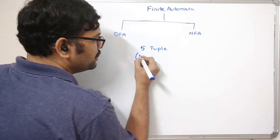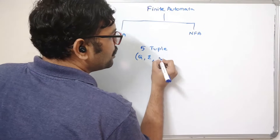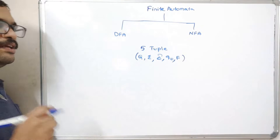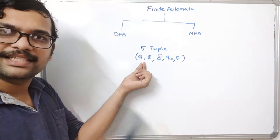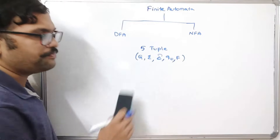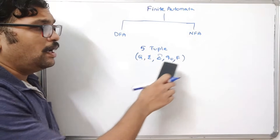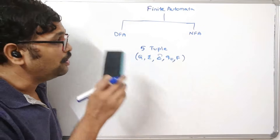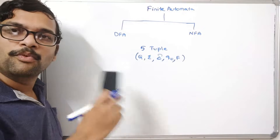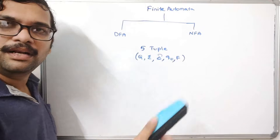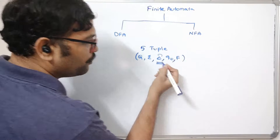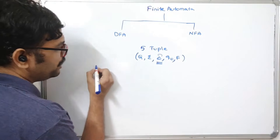The five-tuple consists of Q, sigma, transition function, initial state, and final state. Q is all the states of a transition diagram and sigma is the set of input symbols. Q-naught is the initial state and F is the set of final states. Every DFA or NFA should have a single Q-naught, and F can have more than one state — one initial state and multiple final states. The difference between DFA and NFA is only in the transition functions.